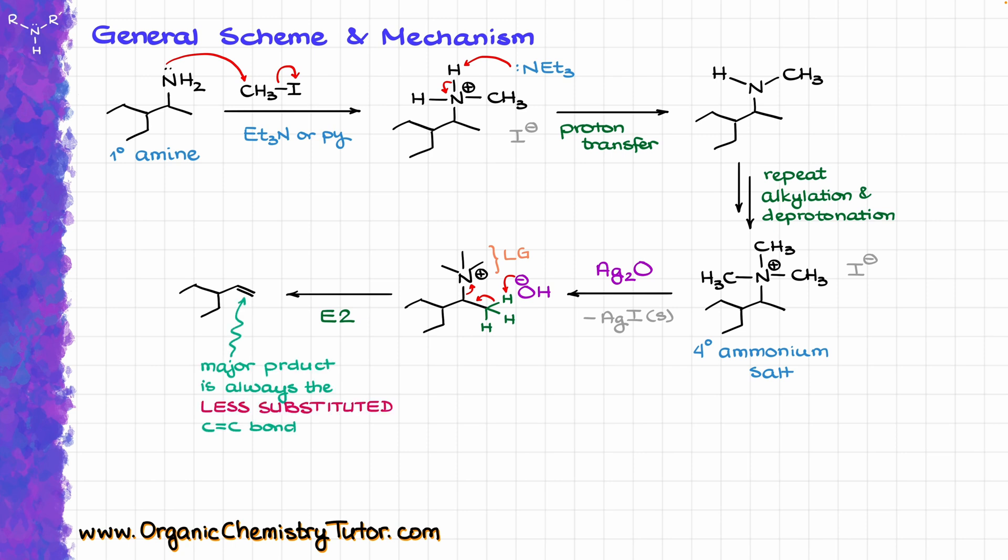The super important point about this elimination is that we're going to be getting a less substituted carbon-carbon double bond. This is called the Hoffman product, which you probably remember from substitution elimination reactions. The formation of the less substituted product is a feature of the reaction rather than a bug.